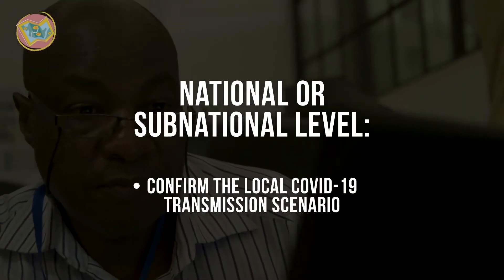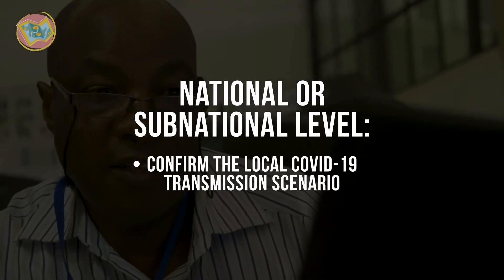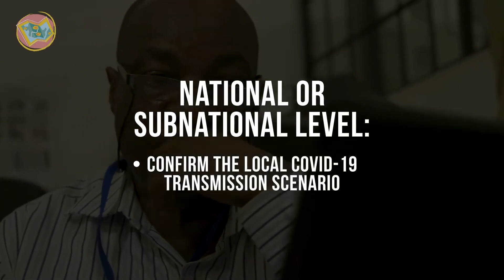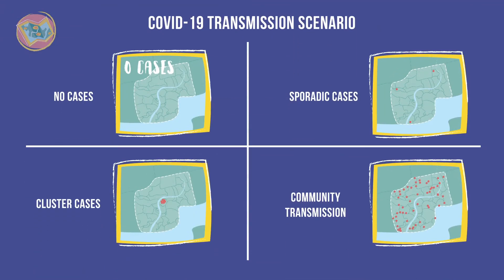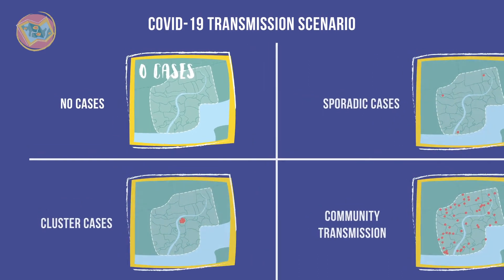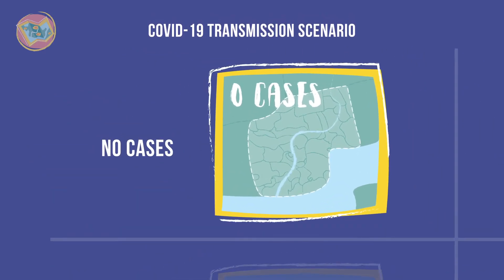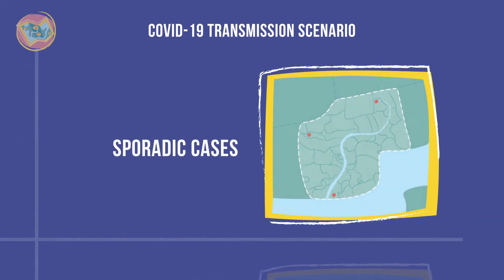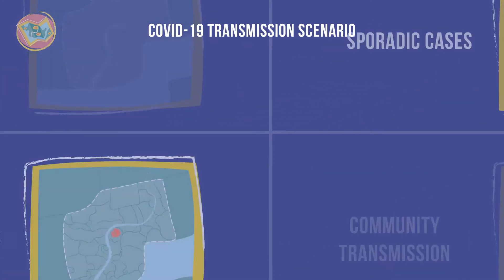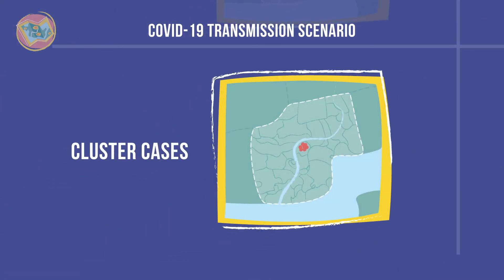Program leaders at the national or subnational level first confirm what the local COVID-19 transmission scenario is. There are four types of transmission scenarios: no cases, where a country has no confirmed cases; sporadic cases, where a country has one or more cases locally detected or imported; clusters of cases, where a country has clusters in time, geographic location, or common exposure.